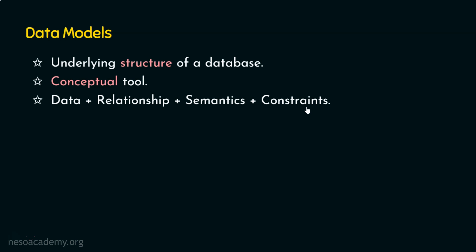A database is actually a collection of interrelated data. When we say it is a collection of interrelated data, we know it is going to store the data — the interrelated data — meaning the relationship among the data also exists. We also need to deal with the data semantics and the constraints, meaning what kind of data are stored, what kind of data are not permitted. So we obviously need data models in order to deal with databases.